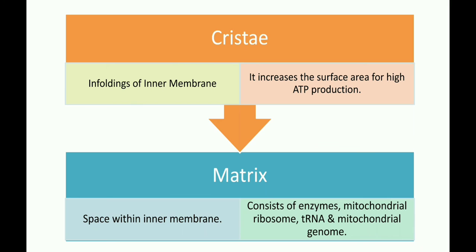Cristae are the in-foldings of the inner mitochondrial membrane that extend deeply into the matrix. Cristae is the plural term. They increase the surface area for high ATP production — more cristae means more ATP production. The matrix of the mitochondria is the space present within the inner membrane, and it consists of mitochondrial DNA, ribosomes, oxysomes, and various inorganic ions.